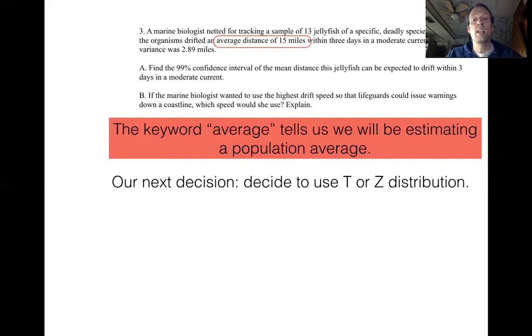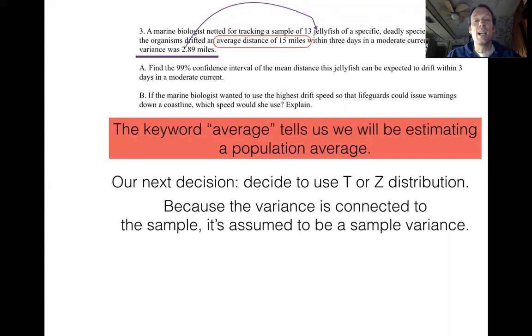And we have to decide, again, are we using the Z distribution or the T distribution? When they gave us variance information, notice how that variance is connected to what they told us when they were relaying information about the sample. And that means that the variance is connected to the sample. So that's our clue that we're going to be using the T distribution.